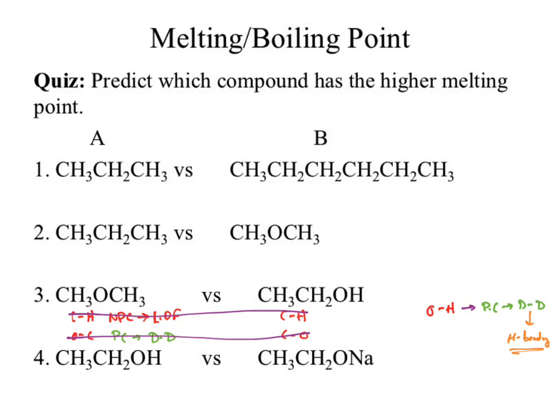We've got work for three, so we'll skip over that one and look at two. When we go up to two, what we want to do is classify the bonds that we see. What are the bonds in 2A? We have CH — that's the only bond. A CH bond is a nonpolar covalent bond.